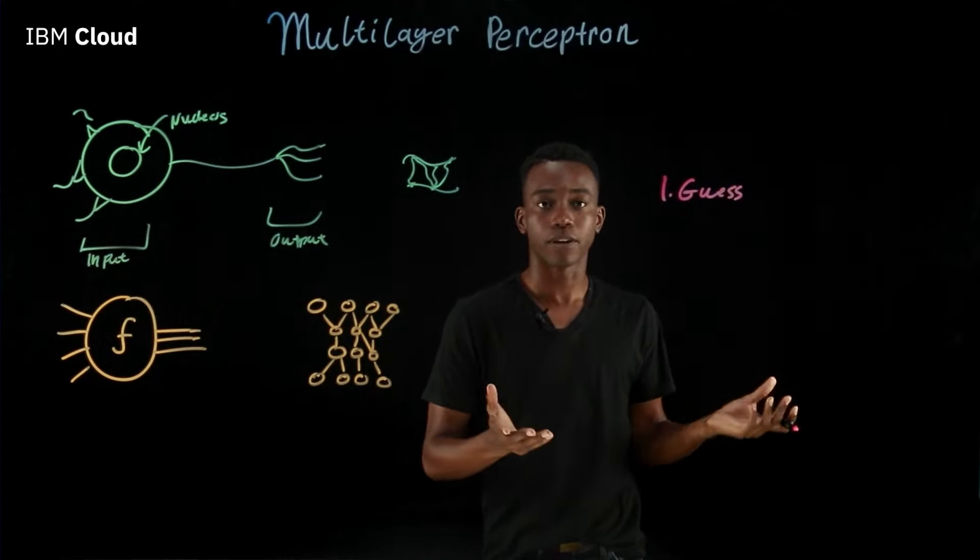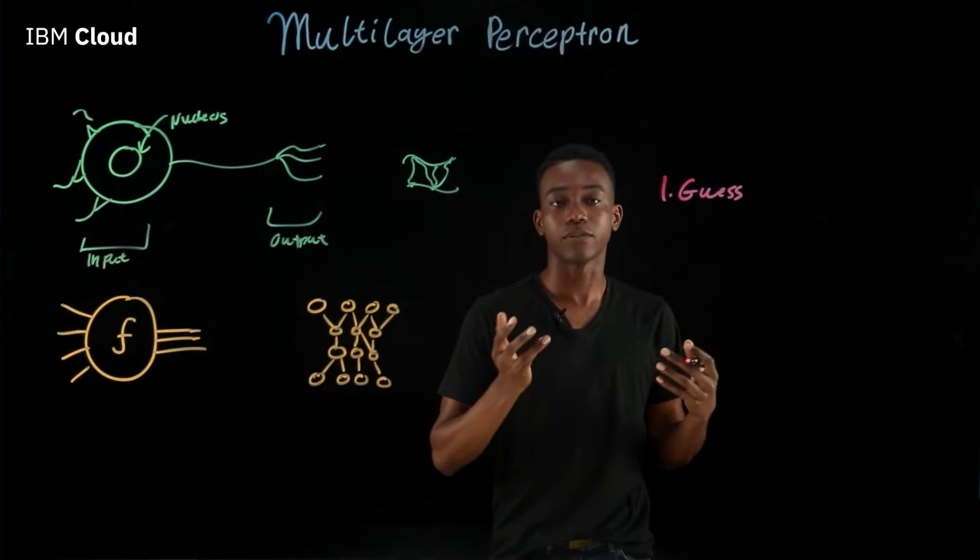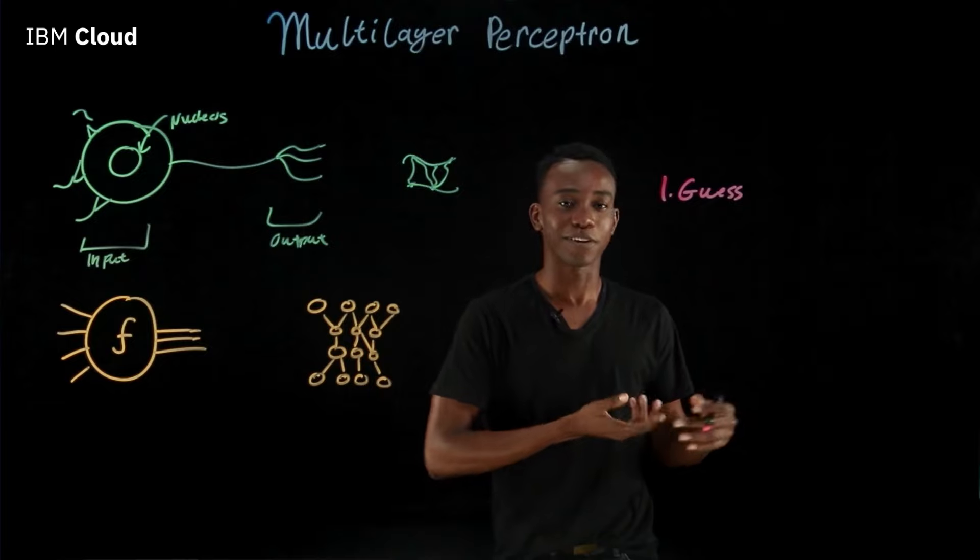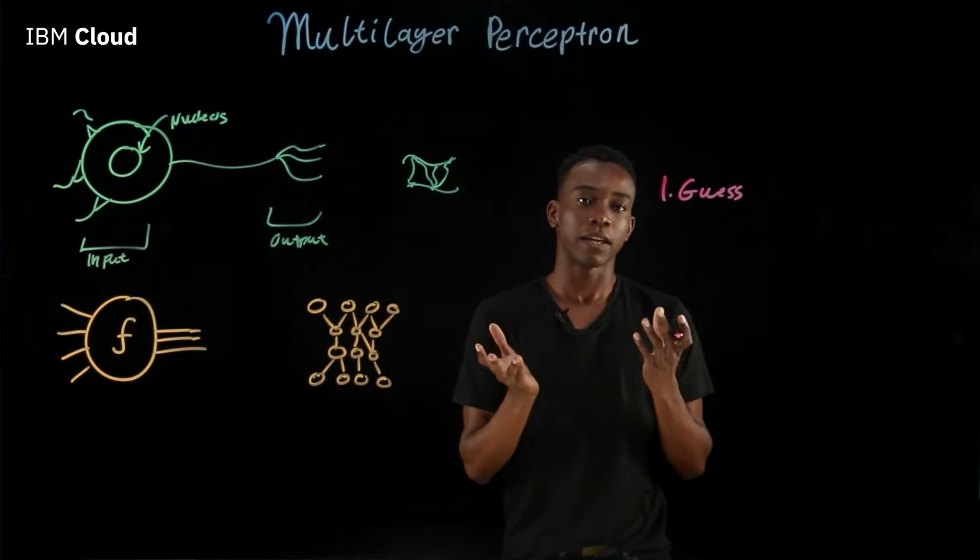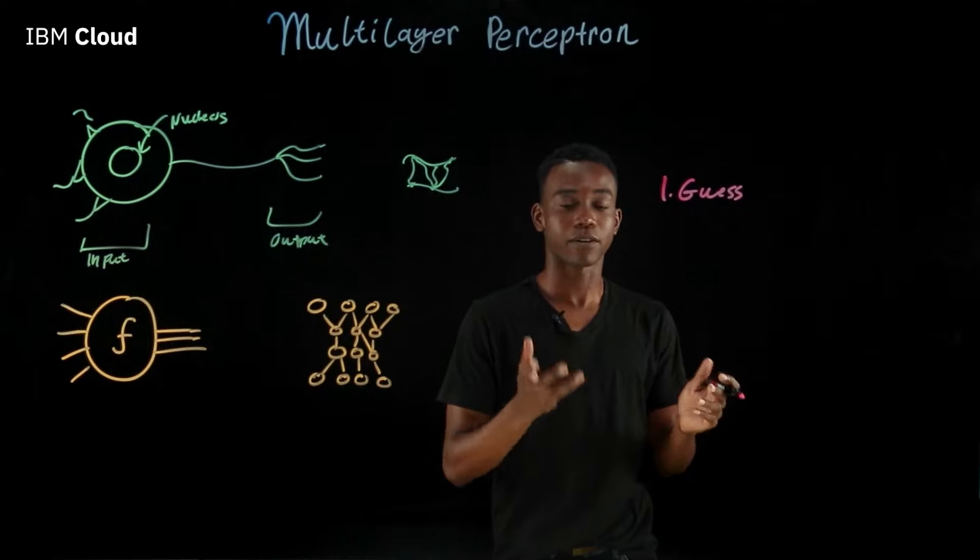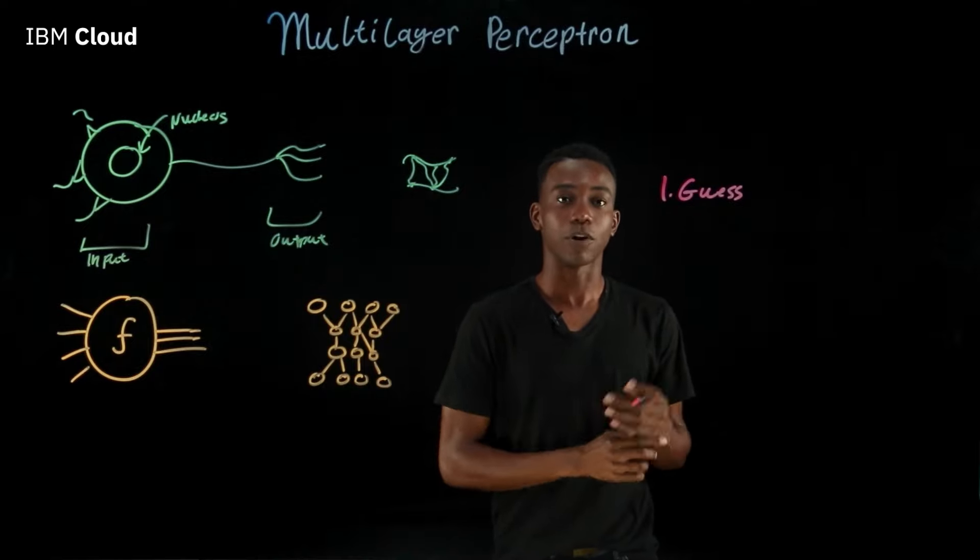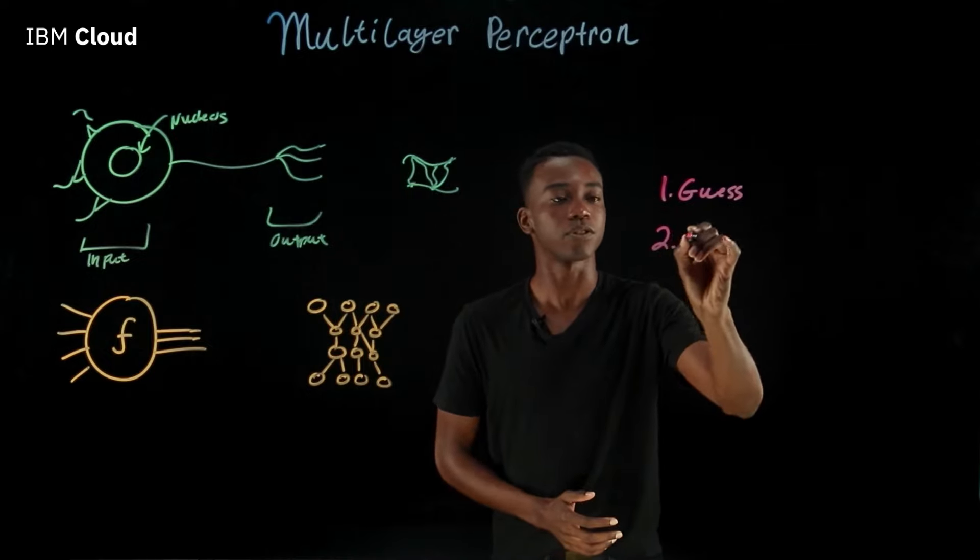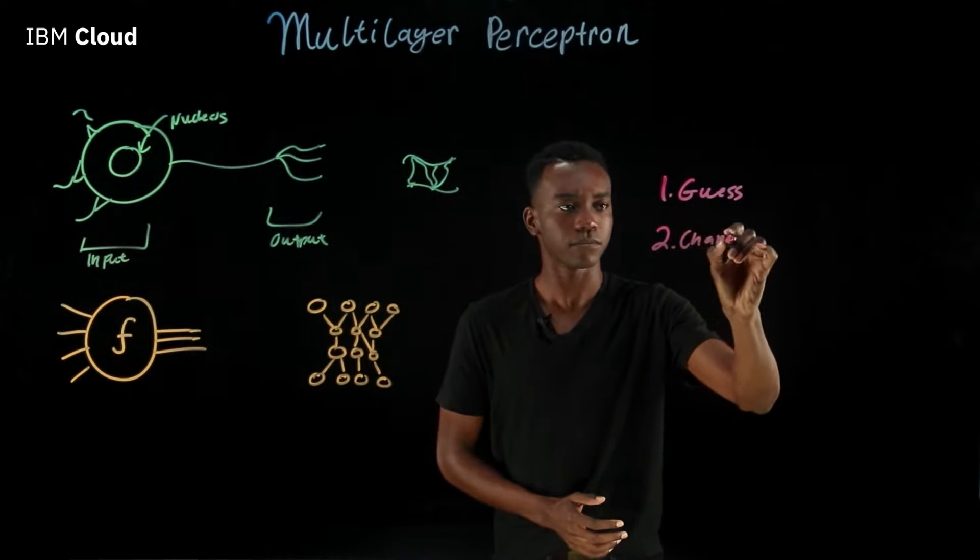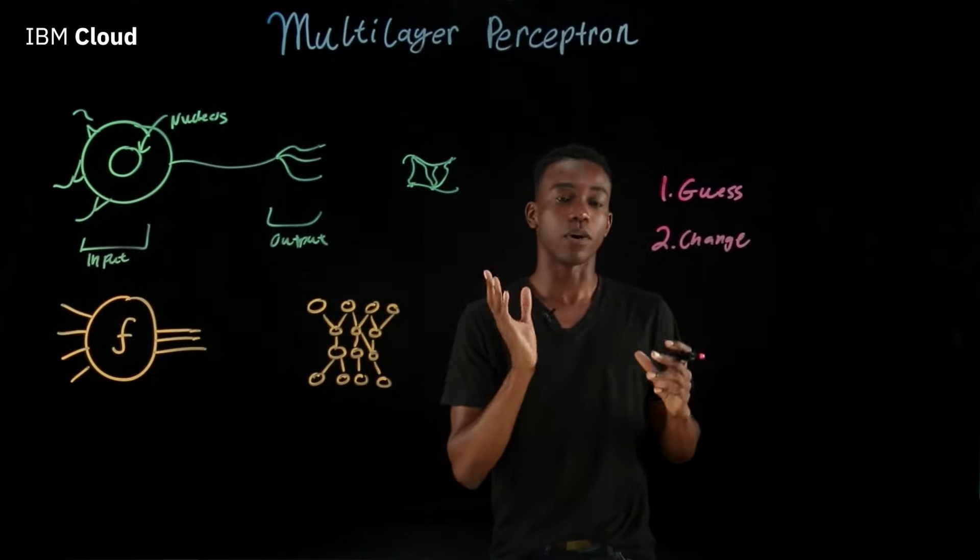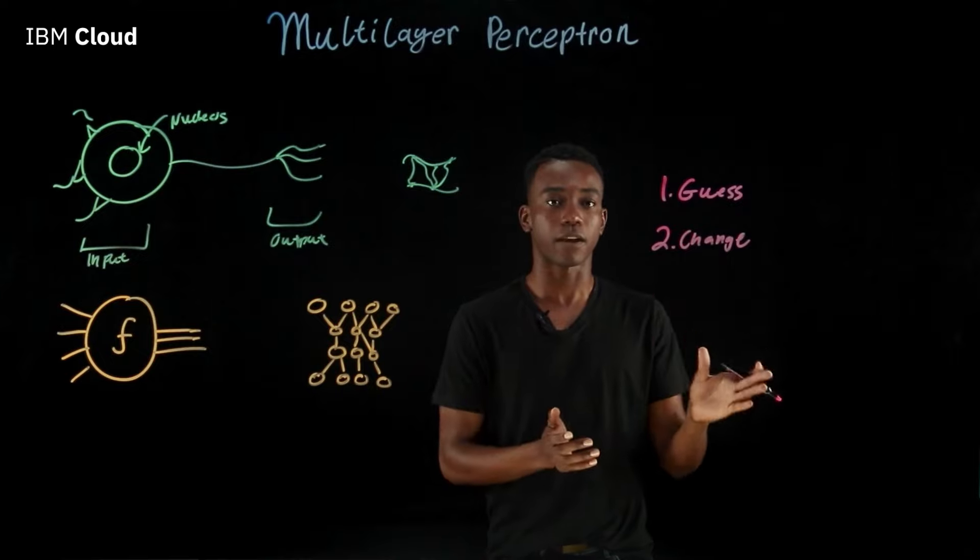For example, when you were learning four-legged animals, you would have seen a bear and you might have called it a dog. Why would you guess a dog? Well, dogs have four legs and a tail and this particular bear has four legs and a tail. Well, you were wrong. So what you have to do now is the second step of learning, which is to change. So you change your mind about what the difference between a dog and a bear is.